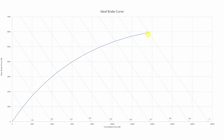Now let's see what happens if instead we assume that we're on ice. Ice has a friction coefficient of about 0.2, so let's find the line that says 0.2 and again follow it up until we reach our curve. From there, we can look at the front and rear brake forces. In this case, the front brake force that we could ideally generate is a little over 2,000 newtons, and the rear brake force is a little under 2,000 newtons. This makes sense, because the surface is much more slippery, so we shouldn't be able to create as much braking force as you would on something like dry pavement.